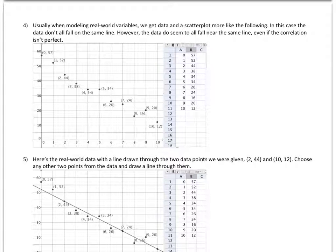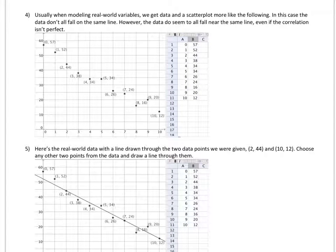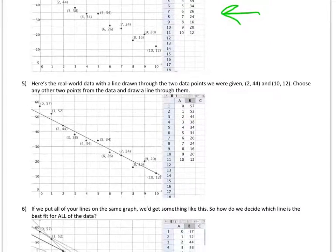But in reality, when we're modeling real-world variables, we get data and a scatter plot that looks more like this picture right here. In this case, the data don't all fall along the same line. However, the data do seem to fall all near the same line, even if it's not perfect.